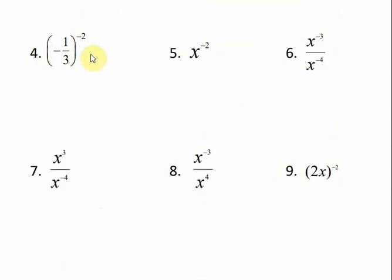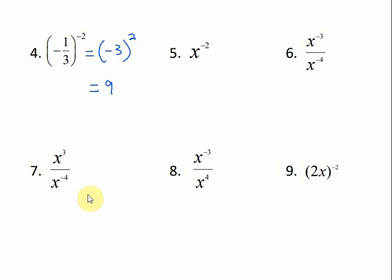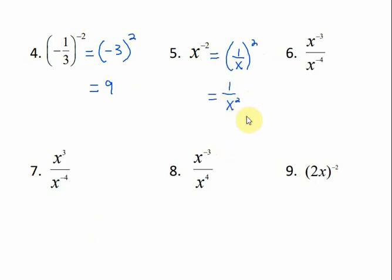For number 4, I have negative 1 third to the negative 2 power. If I flip the inside, that becomes negative 3 and the exponent becomes positive 2. Negative 3 squared is 9. For number 5, x to the negative 1 half — if I flip x, I get 1 over x to the one half. Then 1 squared is 1 and x squared is x squared.